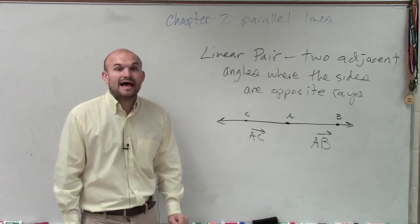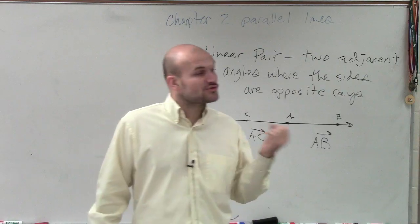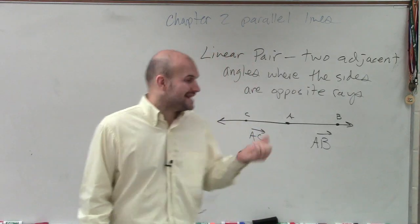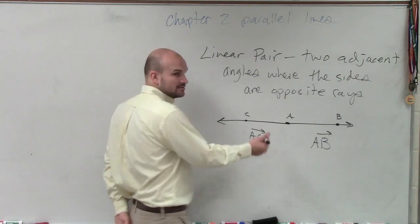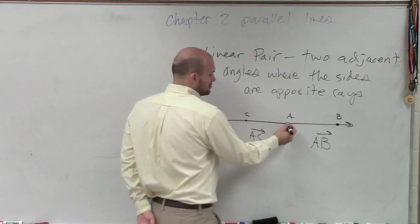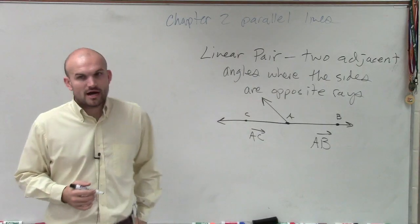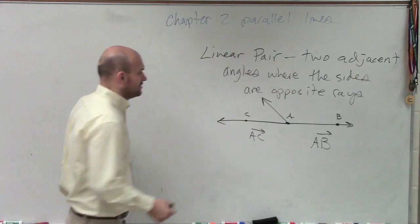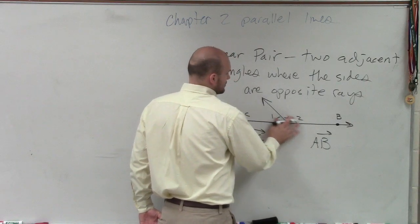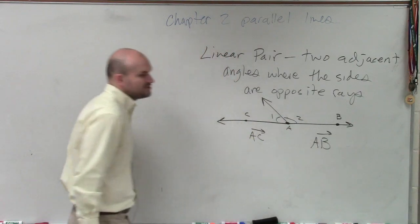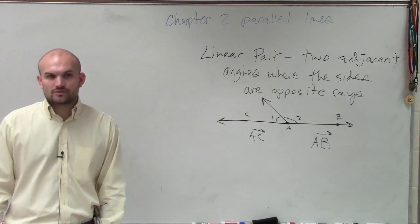So now, a linear pair consists of two adjacent angles. What I need to do is create adjacent angles from opposite rays. If I create a line and a third ray coming off that endpoint, I can label these two angles. Would you say that angle 1 and angle 2 are adjacent?